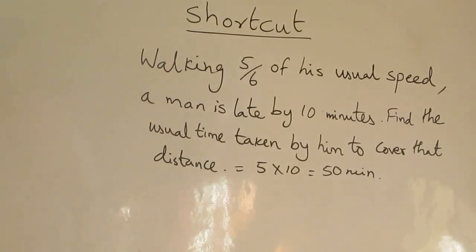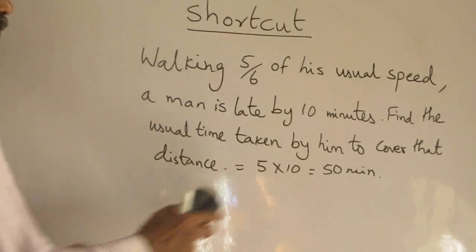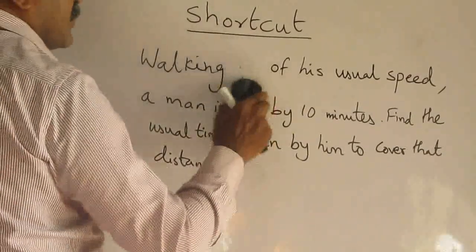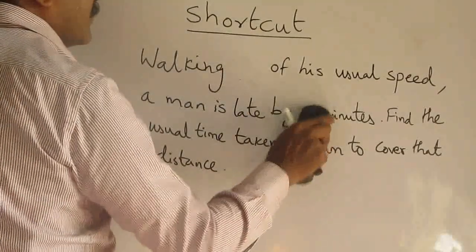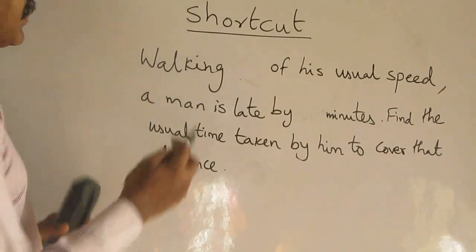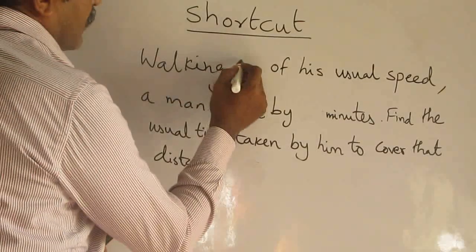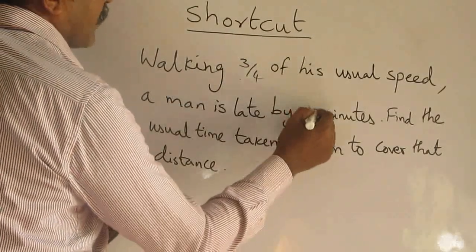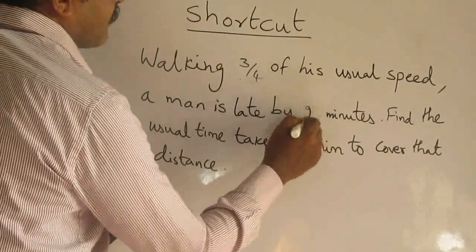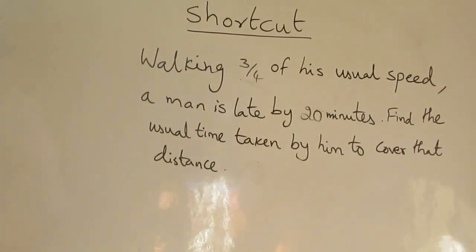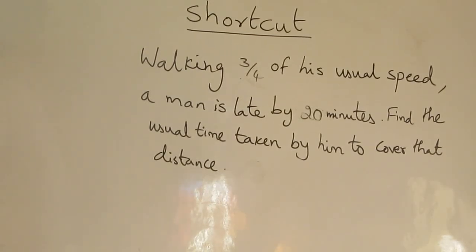Shall we do one more? Let me check how good you are. Let me change the numbers — I used to do this in many of my videos. Now the question is: walking 3/4 of his usual speed, a man is late by 20 minutes.